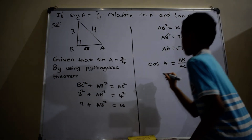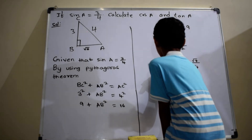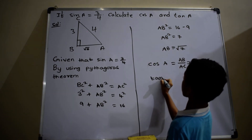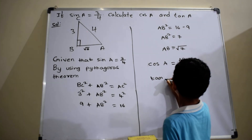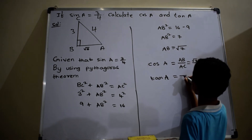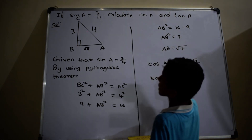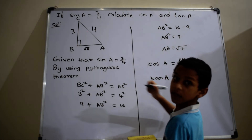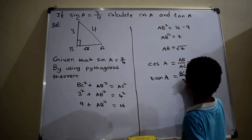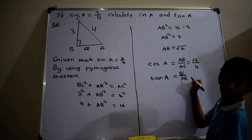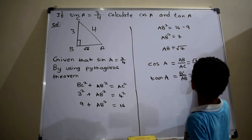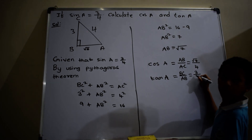And tan A equals BC by AB, which is equal to 3 by square root of 7.